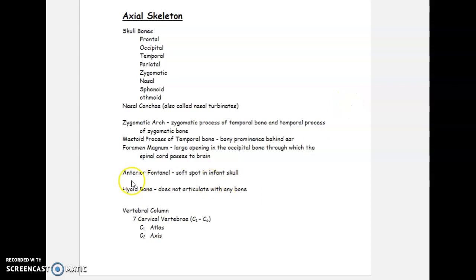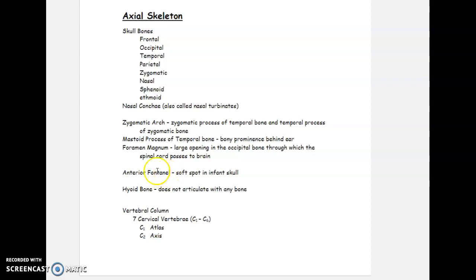Let's continue with some parts of the axial skeleton. The next thing we want to look at is the anterior fontanelle. Fontanelle is the technical name for what a lot of people call soft spots in an infant skull, and the anterior fontanelle is the last one to close up.